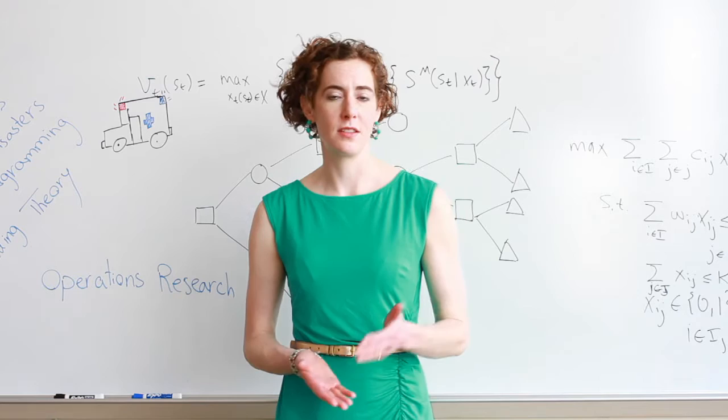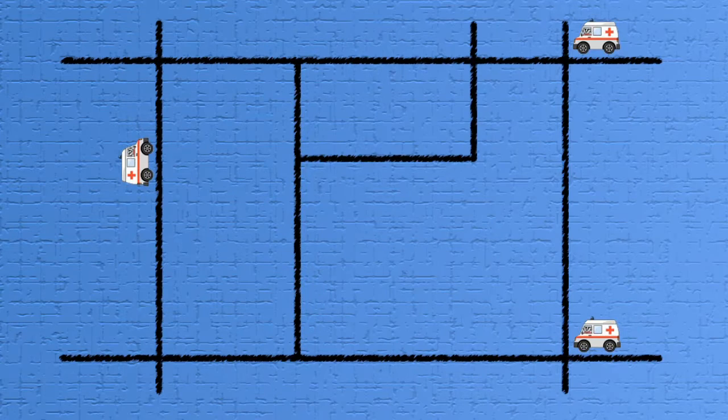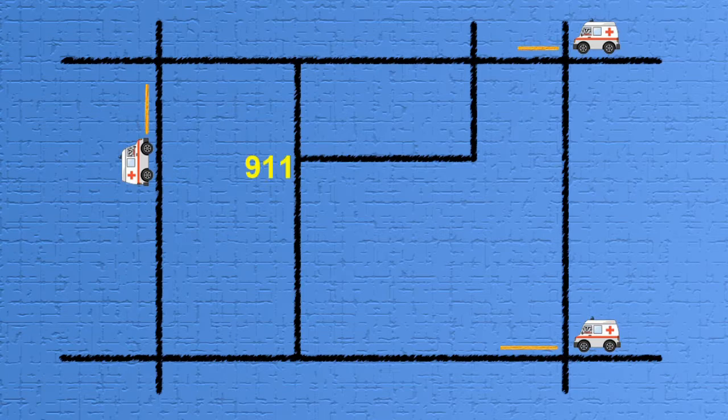Two of the algorithms that I use to solve the optimization models are dynamic programming and Markov decision processes. Both algorithms are pretty similar in that they take the current state of the system, which can be the configuration of ambulances, as well as the incoming call that just arrived, and they figure out the best decision to make for this incoming call, which is usually which ambulance to send.